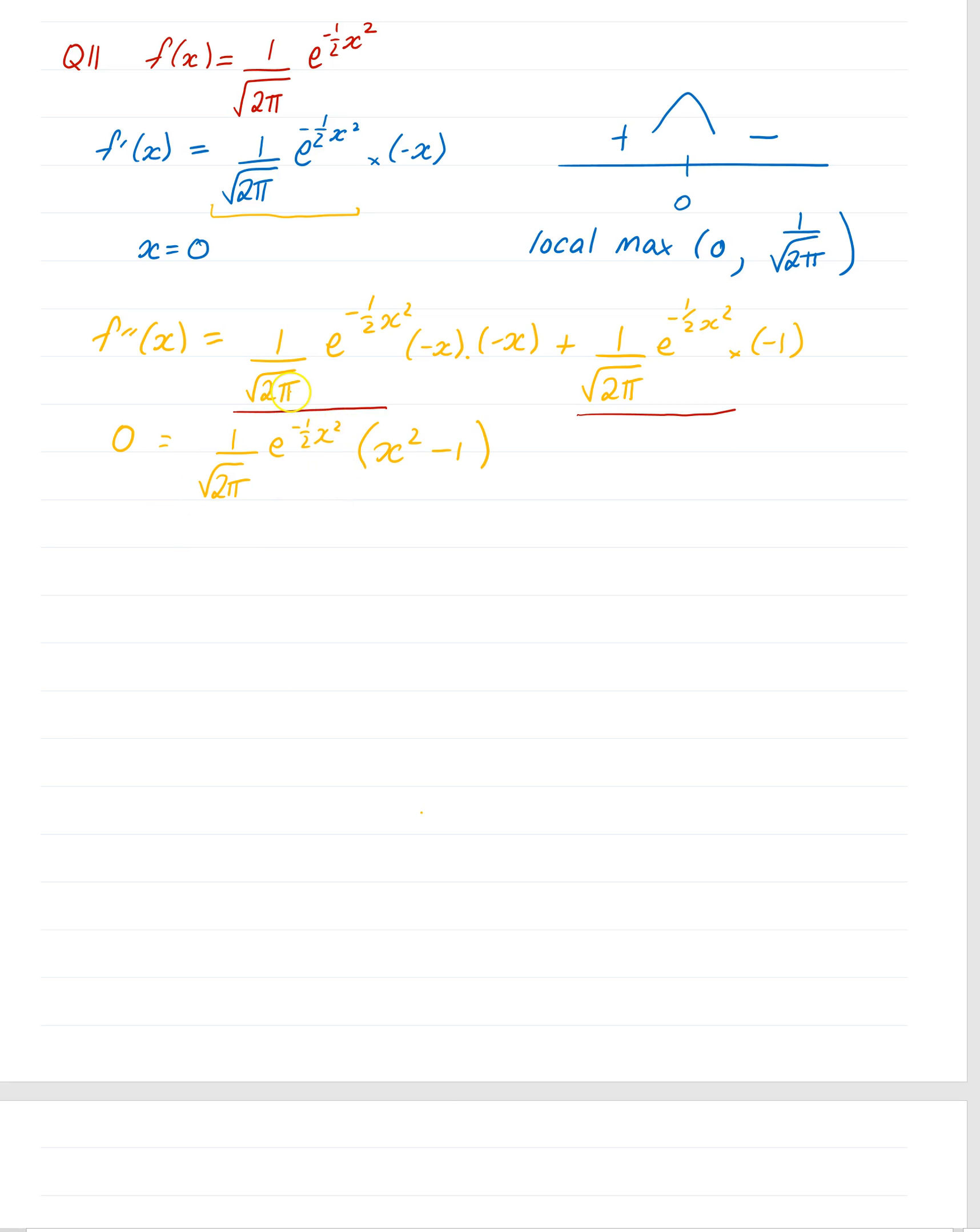Now, again, this whole thing here will never equal 0, so it's up to this little section here, x squared, take 1. And we can factorize x squared, take 1 to be x, take 1 times x plus 1, our good old friend, difference of two squares. So x can equal plus or minus 1.